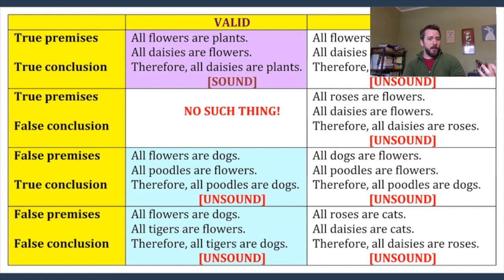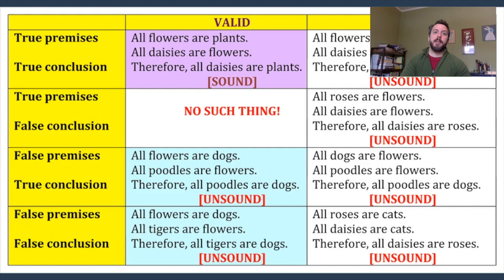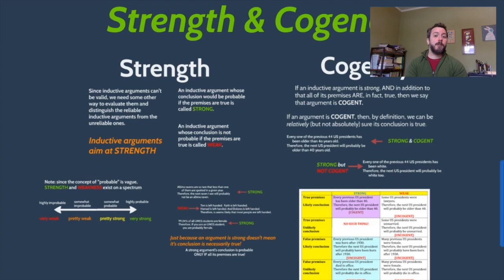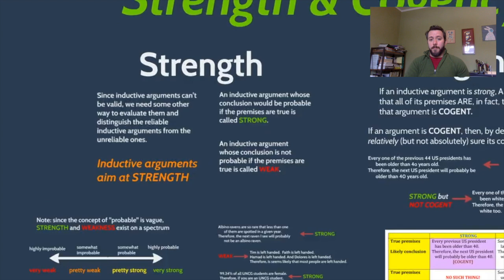Validity and soundness are terms we apply to deductive arguments. For inductive arguments, which aren't aiming for deductive validity and soundness, we have a different concept. Instead of guaranteeing the truth of the conclusion, we're suggesting that if the premises are true, it is very probable the conclusion is true. The term used to talk about the structural quality of an inductive argument is strength. An inductive argument is strong if the truth of the premises means the conclusion is very likely.